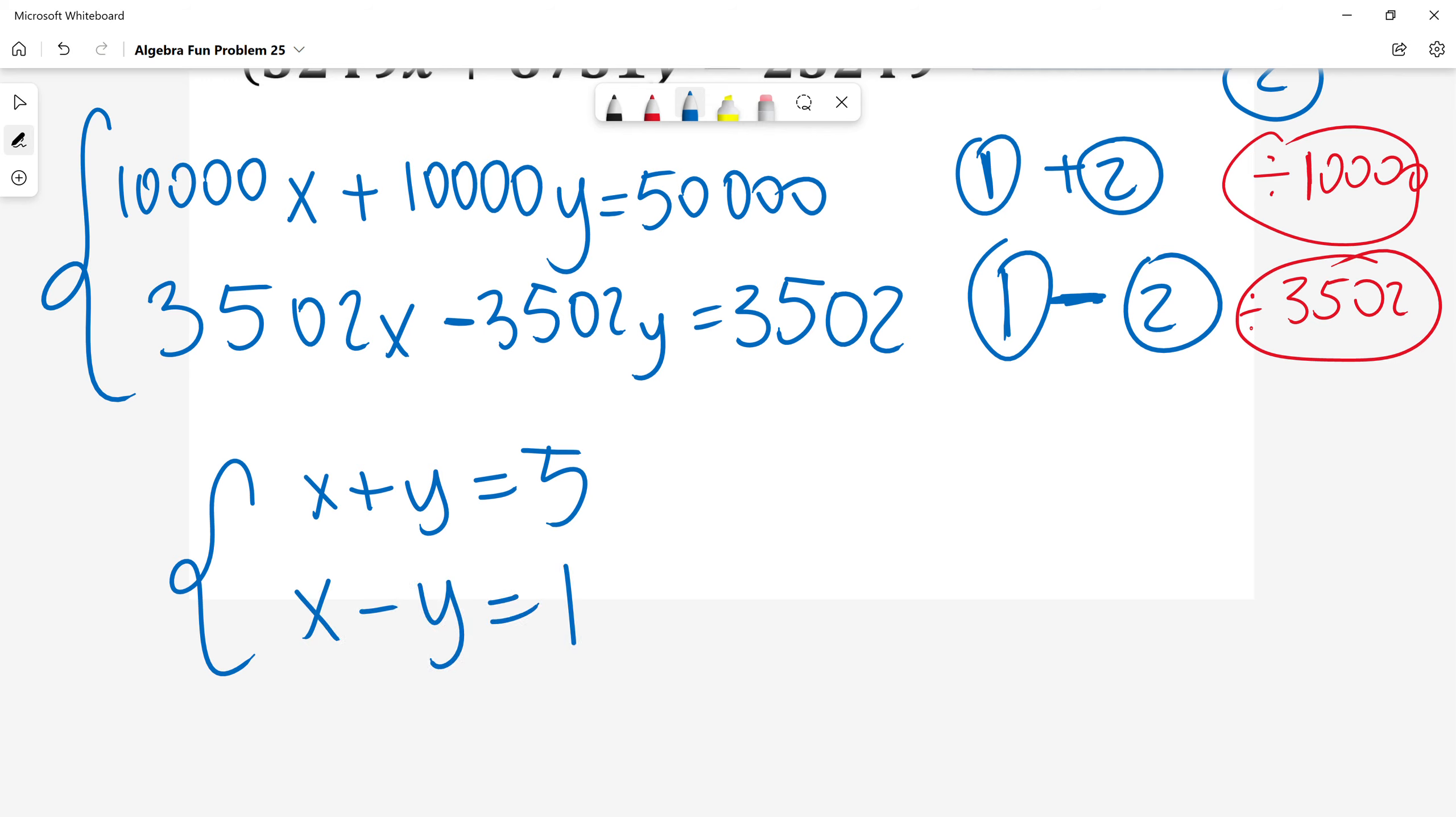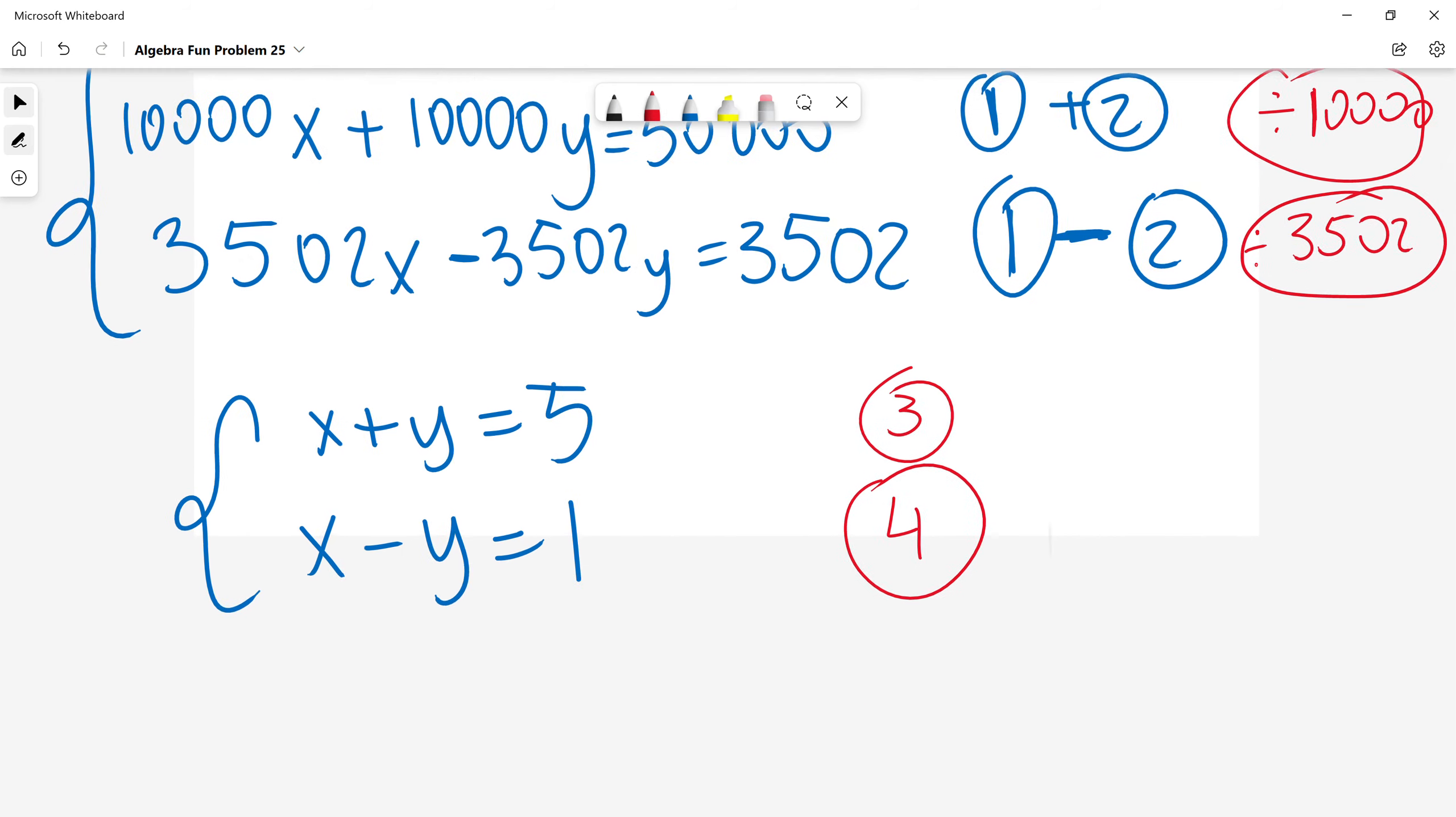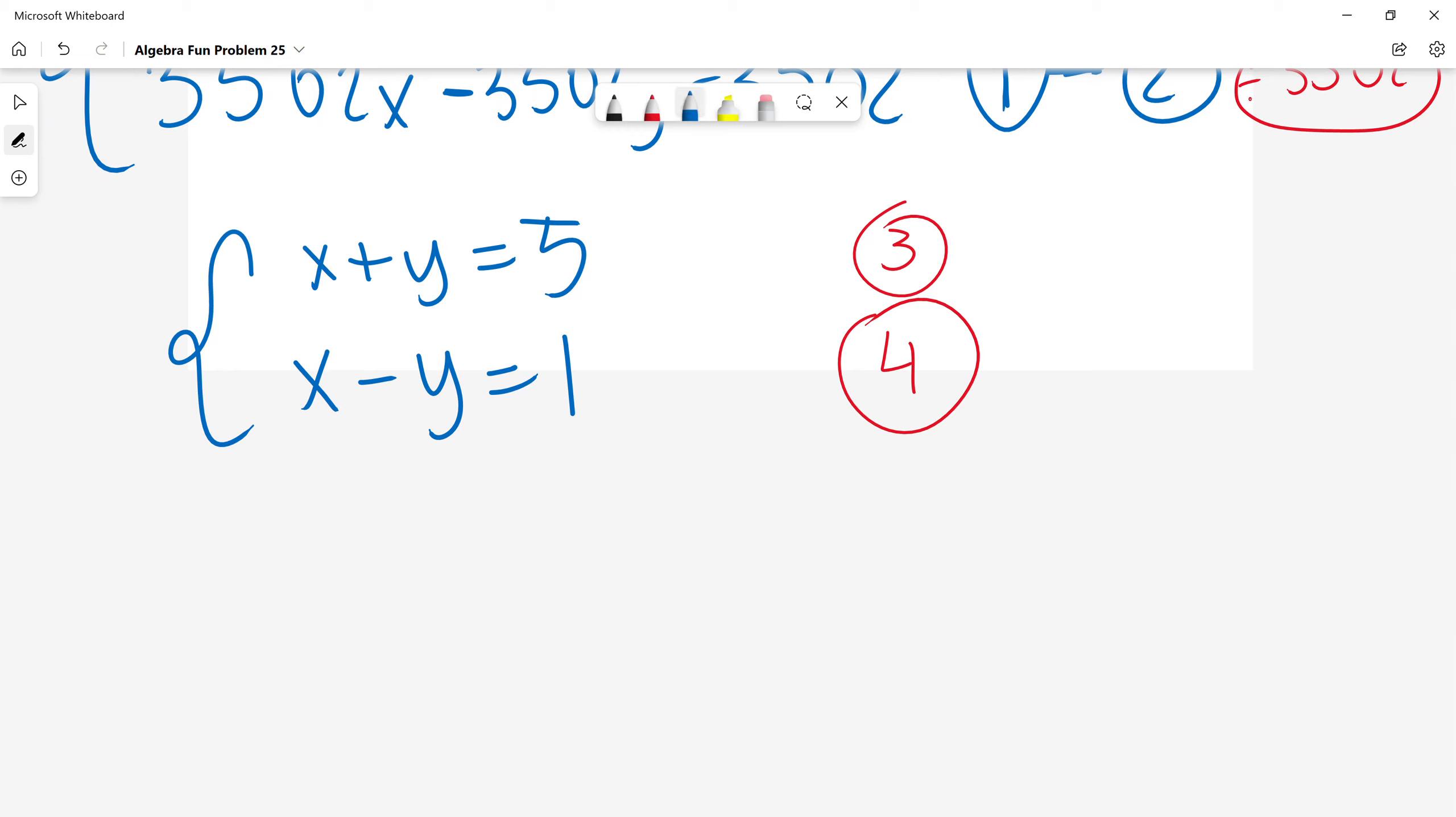If I call this equation 3, if I call this equation 4, and when I do similarly 3 plus 4, I will get 2x is equal to 6. When I divide by 2, x is equal to 3.